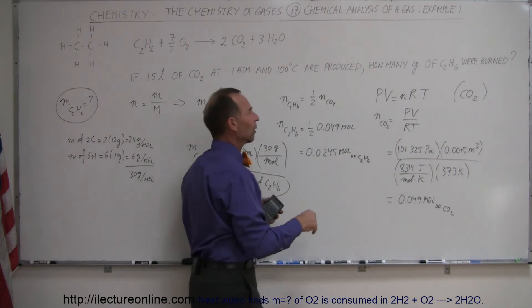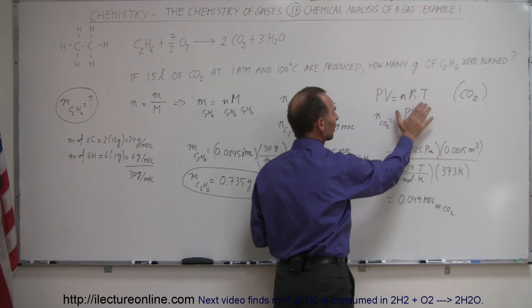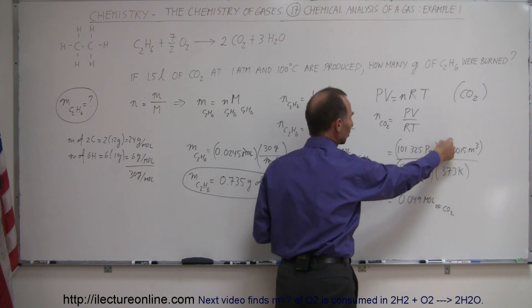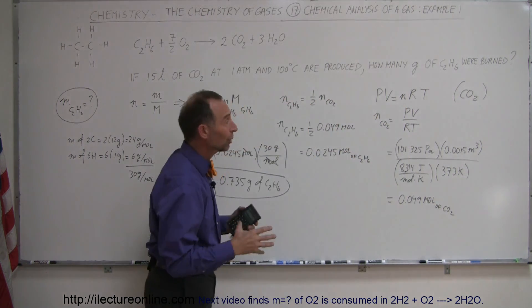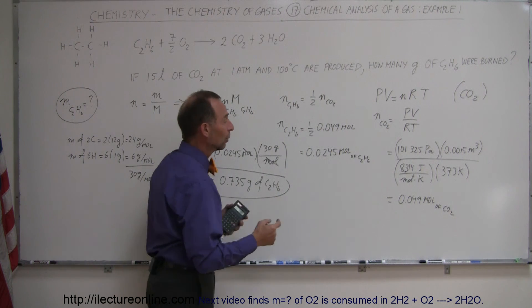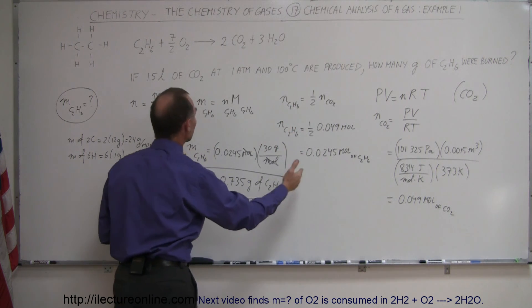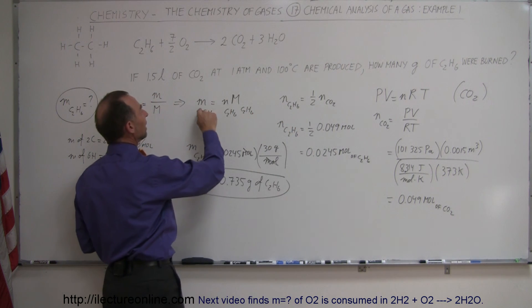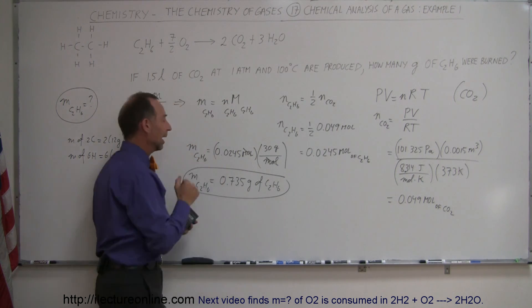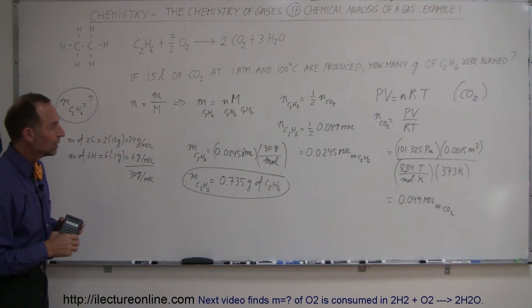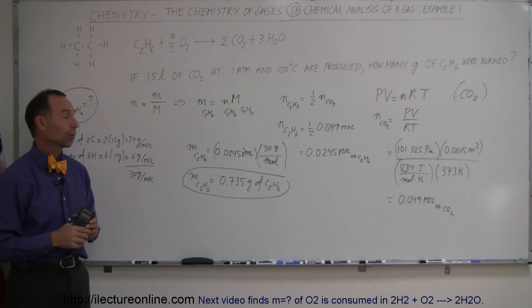Next, we used the ideal gas equation PV equals NRT, solved for N for the carbon dioxide, and based on the given pressure, volume, gas constant, and temperature, we calculated the number of moles of CO2 collected. We then used that to convert to the number of moles of ethane burned in the reaction, and found the mass of ethane by multiplying moles of ethane times the molar mass of ethane. That's how much ethane was needed to produce one and a half liters of carbon dioxide at 100 degrees centigrade and atmospheric pressure.